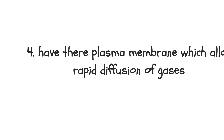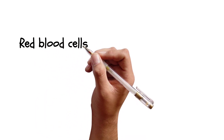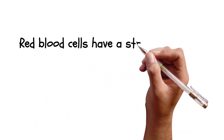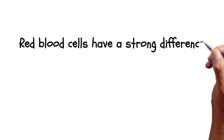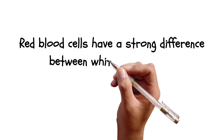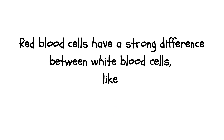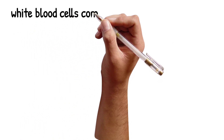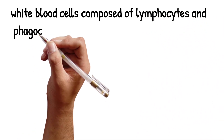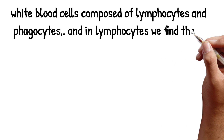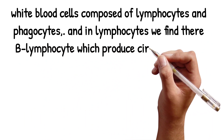Now we are going to see the difference and relationship between red blood cells and white blood cells. White blood cells comprise two parts: phagocytes and lymphocytes. These are the two parts found in white blood cells, and they have distinct differences.